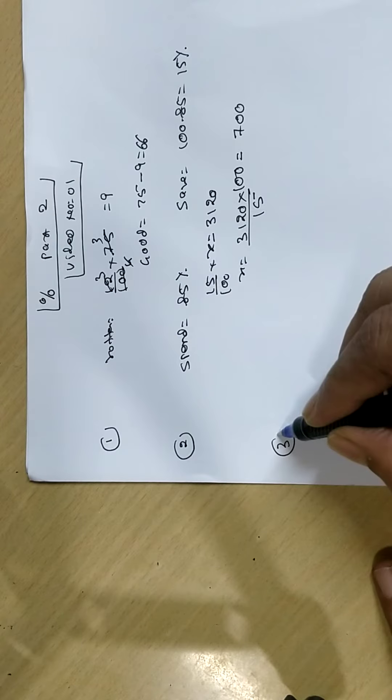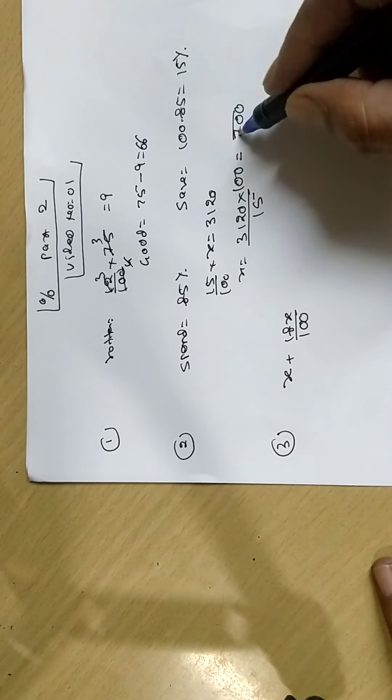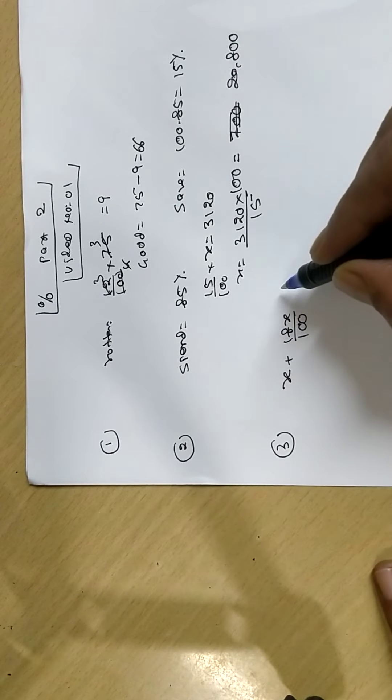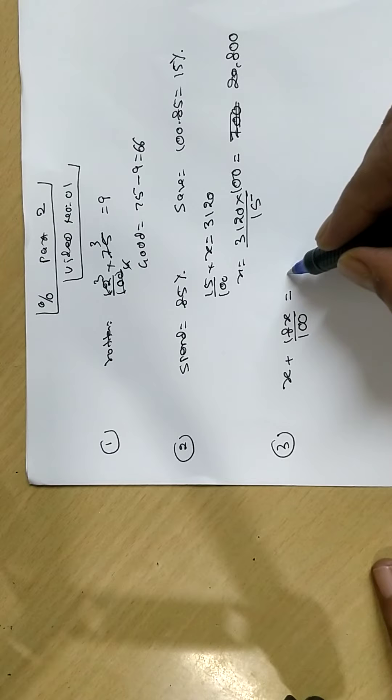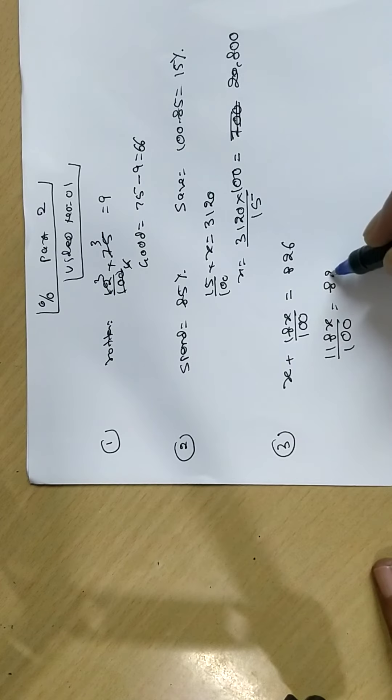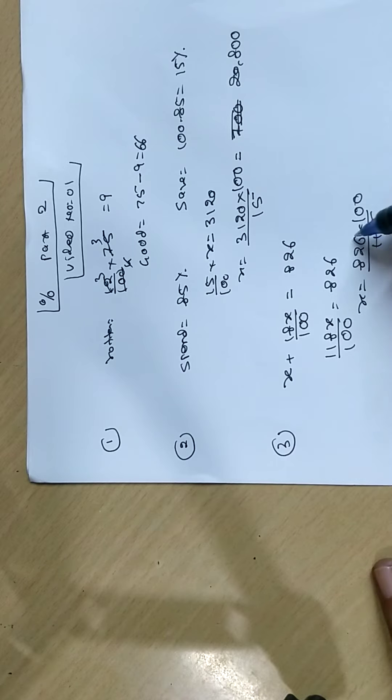Third sum. Let the original price of shirt be X. X increased by 8%, this is 20,800... that equals 826. Take LCM. 108X upon 100 equals 826. X equals 826 times 100 upon 108. 118 sevens are... Answer is 700.